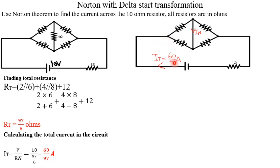When this 60/7 amps reaches the node, it splits — some will pass one way and some will pass the other. We need to find the current that passes through each branch. When the current reaches node 2, it splits: some will pass through IN and some will pass through the 4-ohm resistor. We name the current through the 4-ohm resistor as I_4ohm and the current through the 2-ohm resistor as I_2ohm.